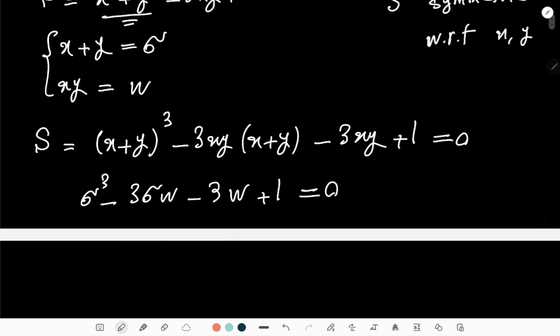So then I get σ³ - 3σw - 3w + 1 = 0. Now I have a new equation based on σ and w. Again what do I notice about this?